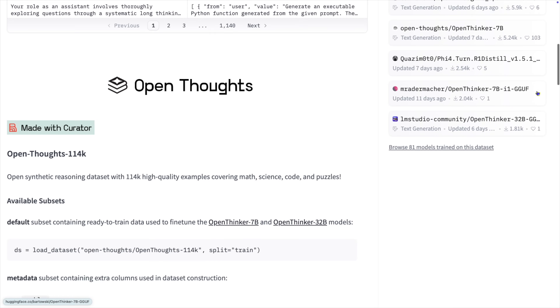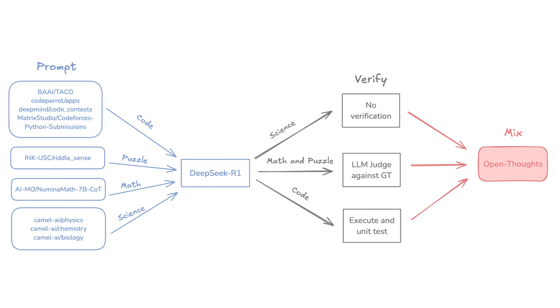This dataset leverages the model DeepSeek R1 to help generate the questions and answers. Essentially, they took questions from a bunch of common benchmarks and used a tool called Curator from Bespoke to ask the questions to DeepSeek R1 and collect the answers. Curator then cleans up the responses to ensure there aren't any repeats or other problems and generates the dataset. If the question was science-related, it is assumed that the answer is accurate. For math and puzzle questions, it's verified by an LLM judge compared to a known answer. And for code questions, the code is executed and unit tested.